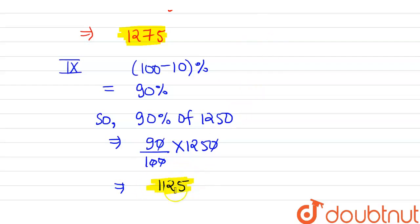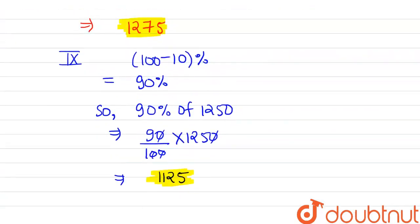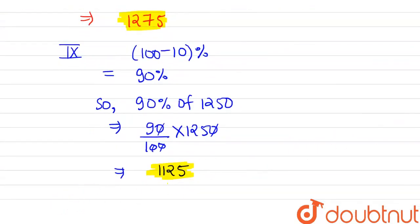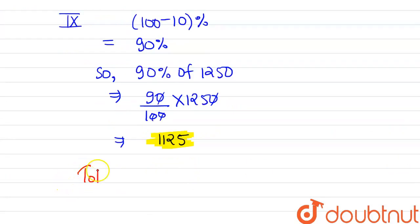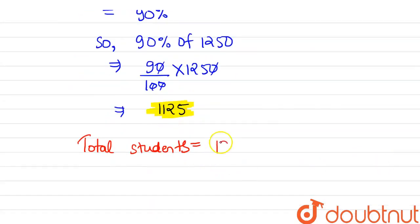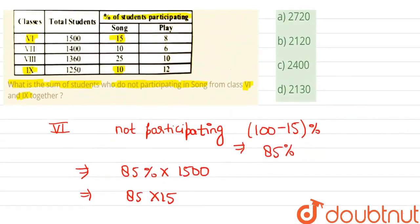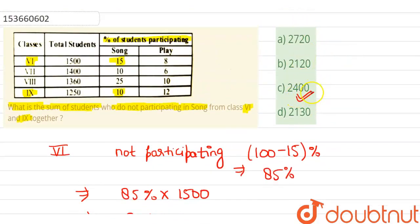Now we need to find the sum of students from class 6 and class 9 who are not participating. Let's add them. 1275 plus 1125 equals 2400, and this will be our required answer. So which option is correct? Yes, here is our C option. 2400 is the correct answer to this question.